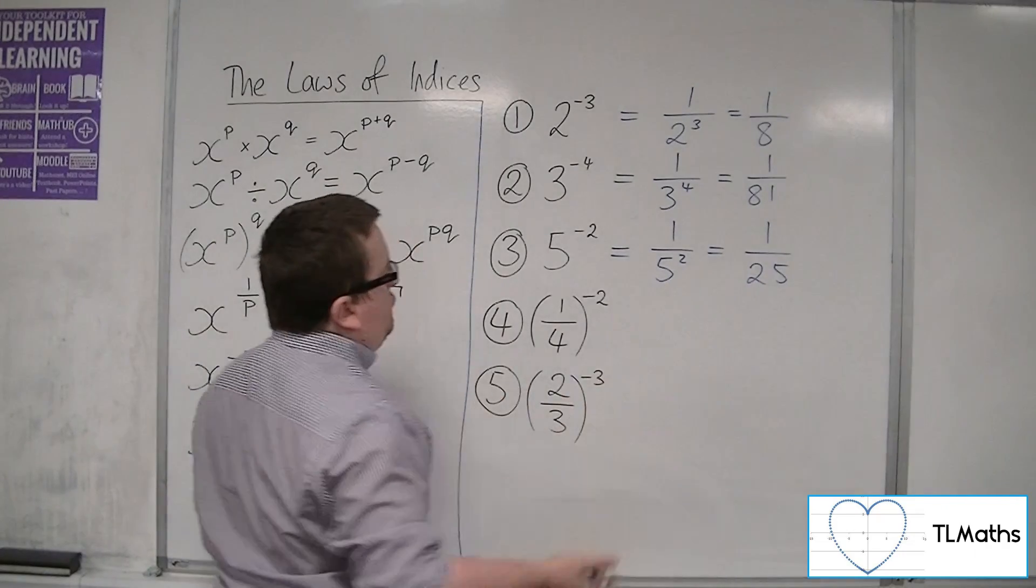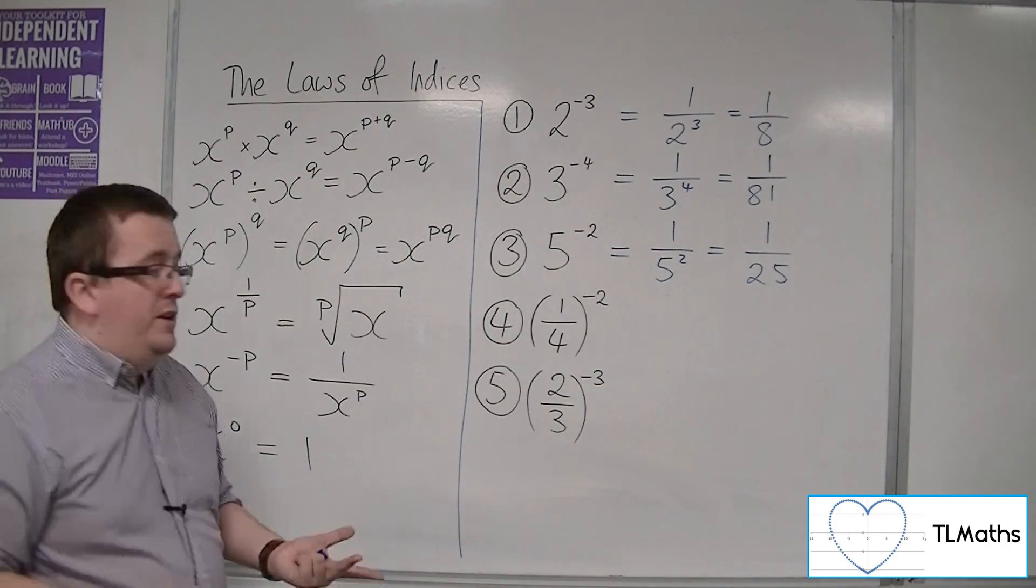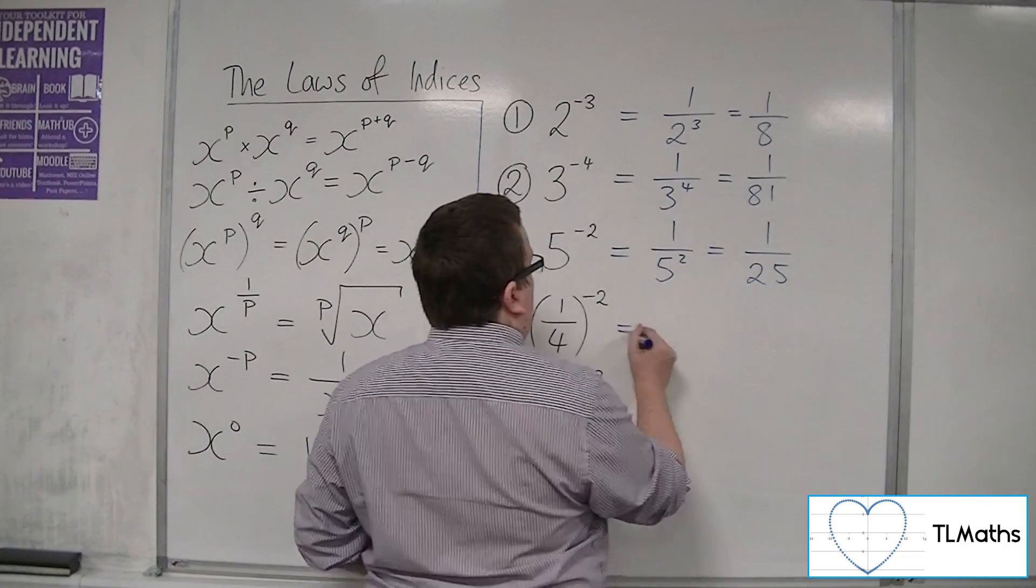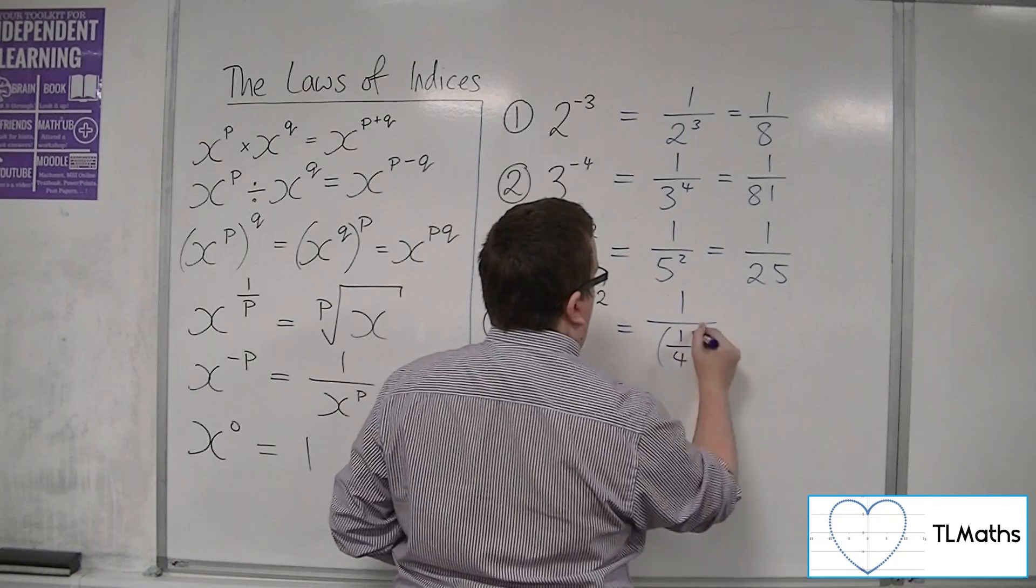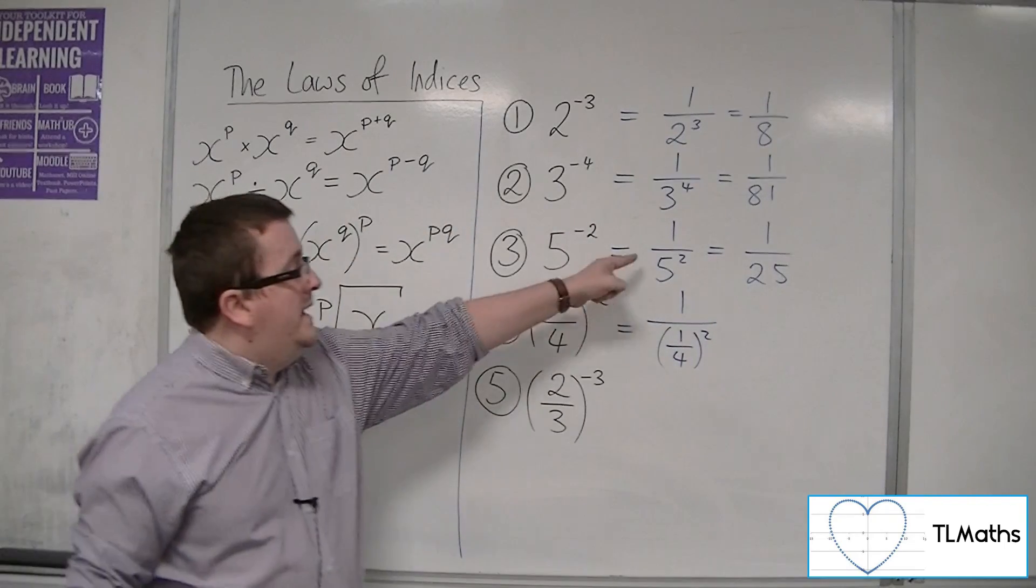When you get to fractions, 1 quarter to the minus 2, for example, all that's saying is 1 over a quarter squared. It's a similar idea.